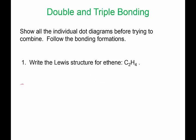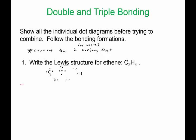Here's a rule of thumb: if you anticipate there being a double bond or triple bond, connect the two carbons first, and then see how the other atoms are going to attach. If we draw out all the dot diagrams — two carbons and four hydrogens — the only way this will work to get everything connected is these two carbons will connect and make a double bond.